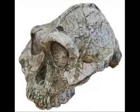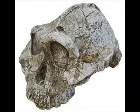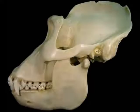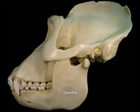Paranthropus boisei was an early hominid that lived from 2.6 to 1.2 million years ago. On skulls of the males, we may notice a very defined sagittal crest, which is the bony ridge mohawk that sits atop the skull. This crest is present on animals that have strong jaw muscles for chewing, like the gorilla and the orangutan. It is entirely absent from modern human skulls.